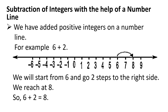Subtraction of integers with the help of a number line. We have added positive integers on a number line. For example, 6 plus 2. First you will draw a number line. Then we will start from 6 and go two steps to the right side as shown in the figure. We reach at 8. So 6 plus 2 is equal to 8.